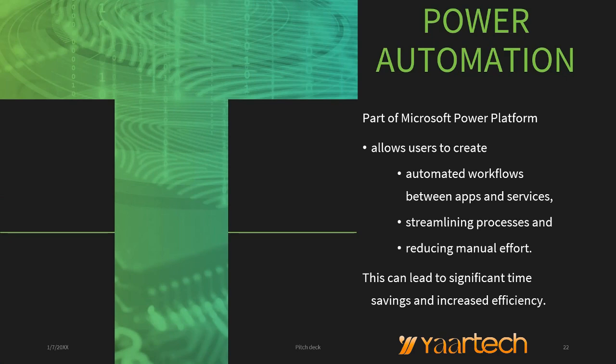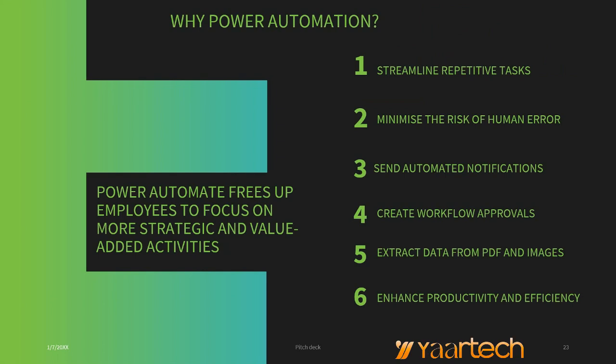This can lead to significant time savings and increased efficiency. Power Automate helps streamline repetitive tasks and processes, reducing manual effort and minimizing the risk of human error. By automating routine tasks, Power Automate frees up employees to focus on more strategic and value-added activities. It can send automated notifications, create workflow approvals, and extract data from PDF documents and images, enhancing overall organizational efficiency and productivity.